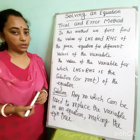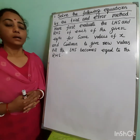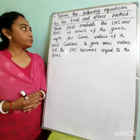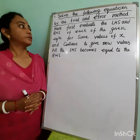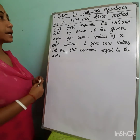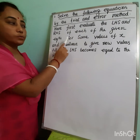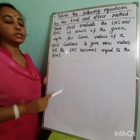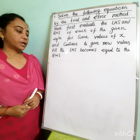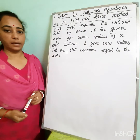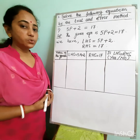When we solve equations by using the trial and error method, we evaluate the left hand side and right hand side of the given equation for some values of x, and continue to give new values until the left hand side becomes equal to the right hand side.